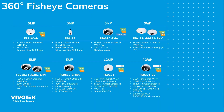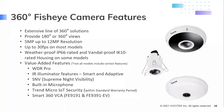Moving over to the 360 fisheye cameras, VivoTech has an extensive line of these types of cameras. They provide 360 degree viewing angles when mounted on a ceiling horizontally, and 180 degree panoramic viewing angles when mounted on a wall vertically. We have eight 5 megapixel models and two 12 megapixel models. Key features include indoor and outdoor rated housings at IP66, anti-vandal rated at IK10, which is an impact of 11 pounds or 5 kilograms at a height of roughly 15 inches or 400 millimeters. Value-added functions include wide dynamic range pro, IR illuminators, smart and adaptive IR, supreme night visibility, built-in microphone, Trend Micro IoT, and smart 360 VCA.